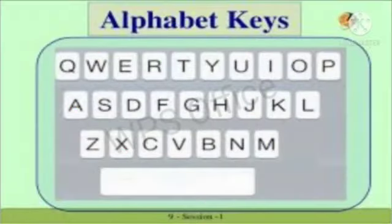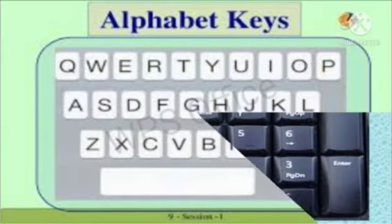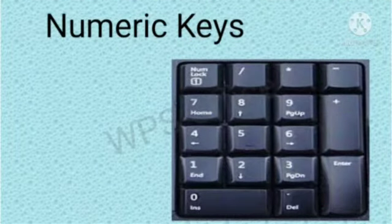Alphabetic keys are marked with the English alphabets from A to Z. There are 26 alphabetic keys. They are placed closely so that our fingers can reach them easily.